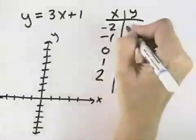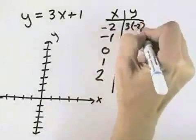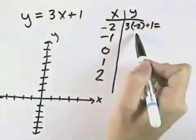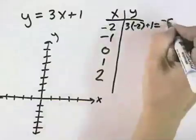So when x equals negative 2, we'd have y equals 3 times negative 2, substituting the negative 2 in, plus 1. 3 times negative 2 is negative 6, plus 1 is negative 5.